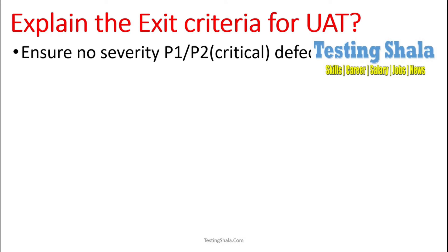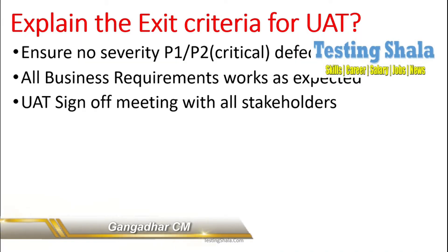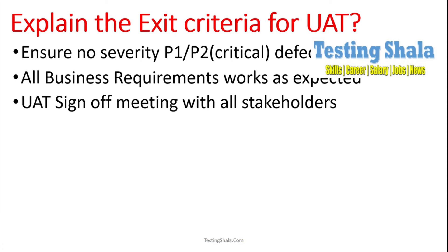Let us understand what those exit criteria are. The first criteria is that the UAT team should ensure no P1 and P2 — no critical defects — are open. The second criteria is that all business requirements work as expected. Third, a meeting should be set up with all stakeholders to discuss the progress of UAT.